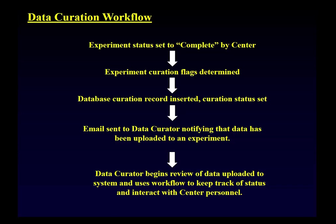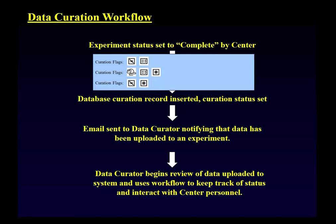When a center marks an experiment as complete, it sets off an automated script that runs on the dataset and assigns what we call curation flags. It inserts a curation record into our system so our curator knows there is a pending dataset, and emails the data curator. The curator then looks carefully at the uploaded data to make sure it is as complete as possible.